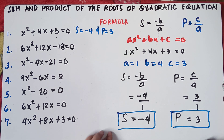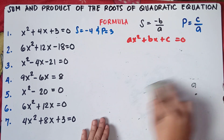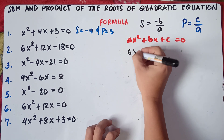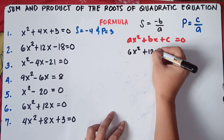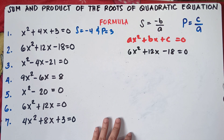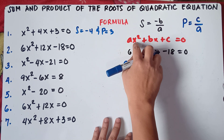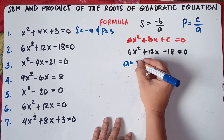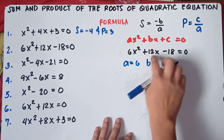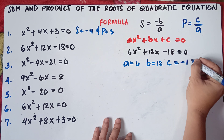Let's try number 2. You just need to follow the standard form of quadratic equation: AX squared plus BX plus C equals 0. The equation is 6X squared plus 12X minus 18 equals 0. Our A is beside X squared, so A is 6. Our B is beside X with exponent of 1, so B is 12. And our C, the number alone, is negative 18.